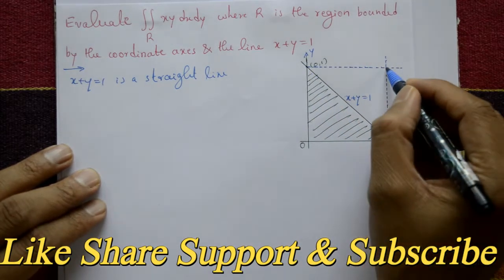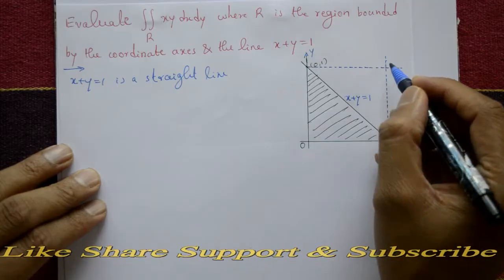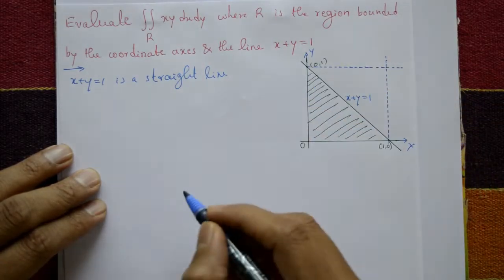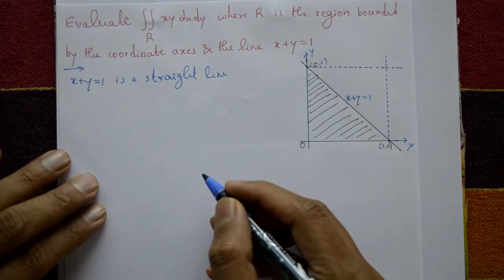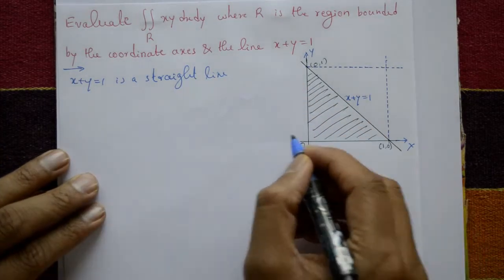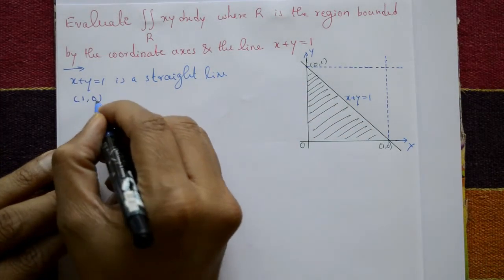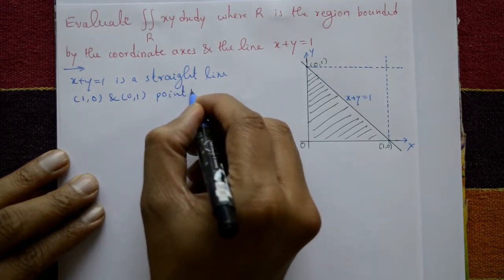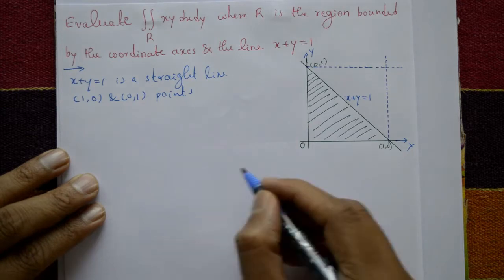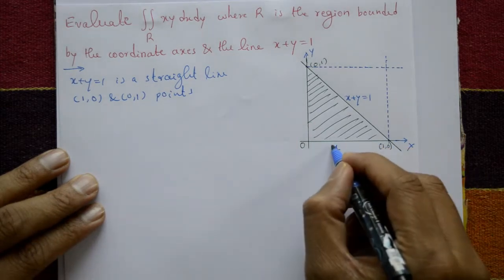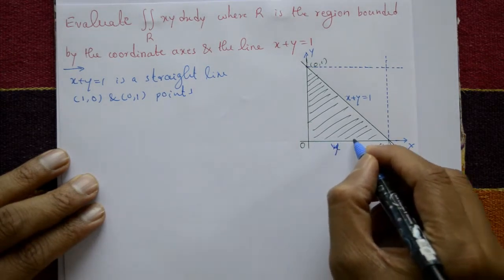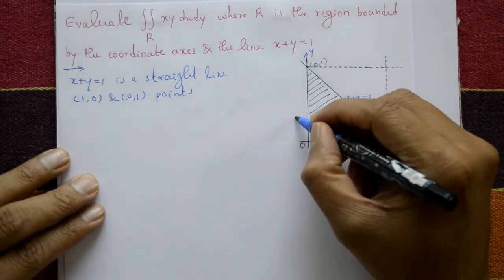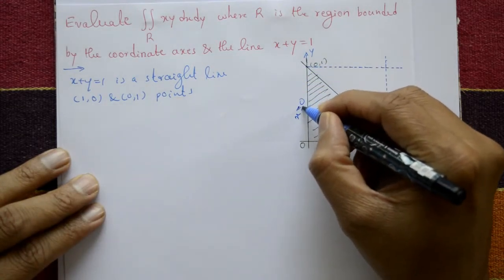The shaded part is the valid region. The points are (1, 0) and (0, 1). On the x-axis, y values are 0; on the y-axis, x values are 0.